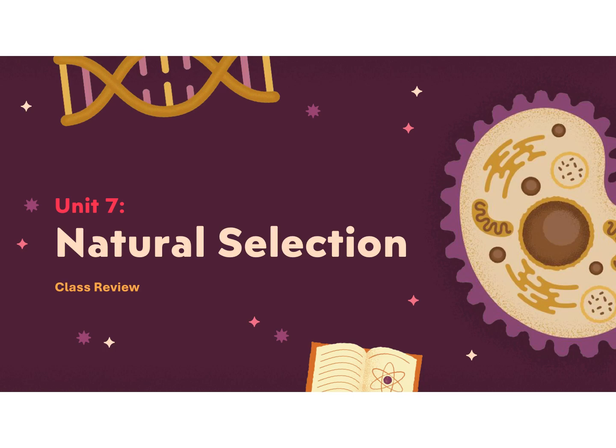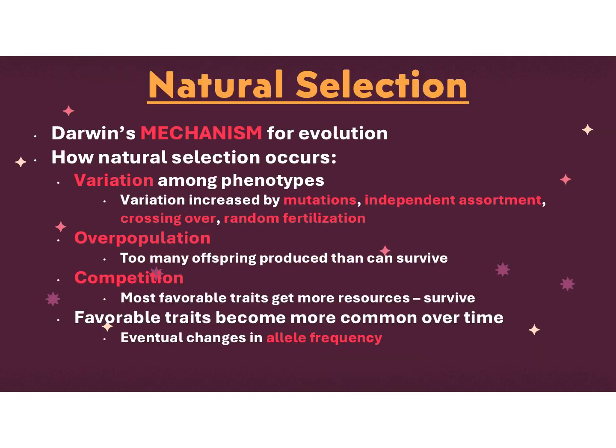This is your review for Unit 7, Natural Selection. Remember that natural selection is a mechanism for evolution. Darwin is known as the father of evolution, but he did not come up with the concept of evolution. He came up with natural selection, which is the mechanism — the how — of how natural selection works.